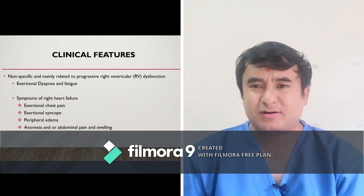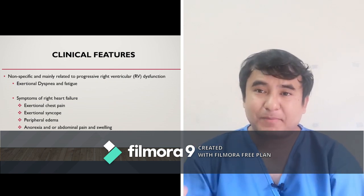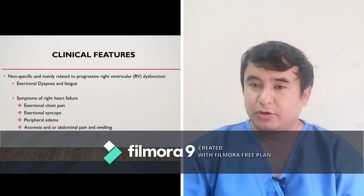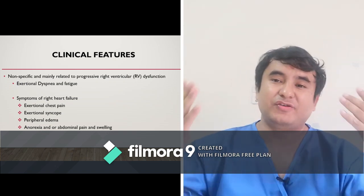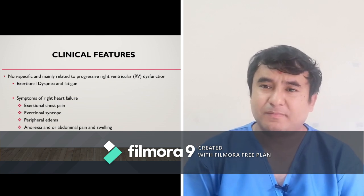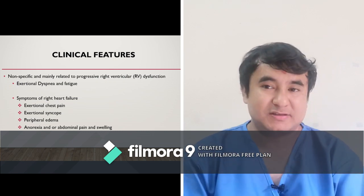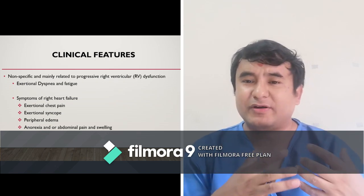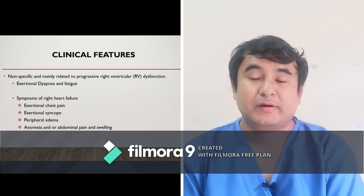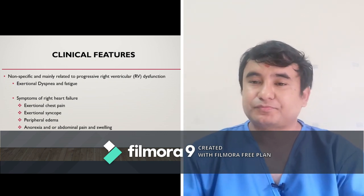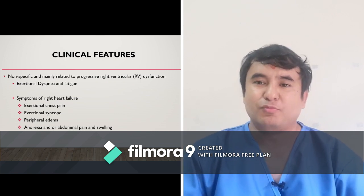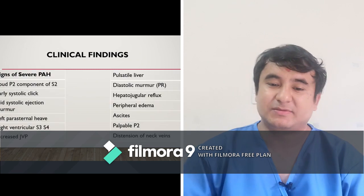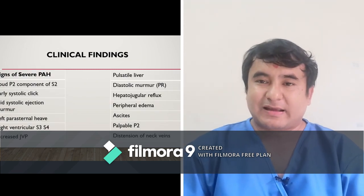Most patients present to us in the OPD or emergency with features of right-sided heart failure, including anasarca. The patient may come with a history of leg swelling, abdominal swelling, and distended neck veins. Sometimes there is right ventricular hypertrophy, causing a supply-demand mismatch — the right ventricle needs more blood than can be supplied — leading to anginal chest pain.